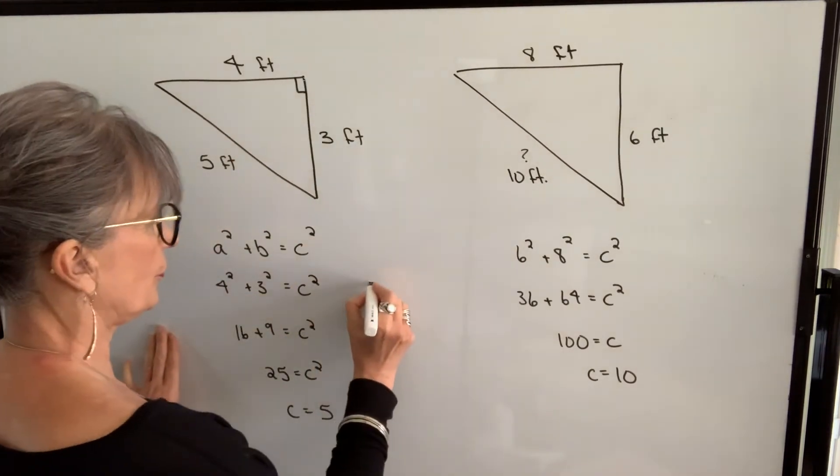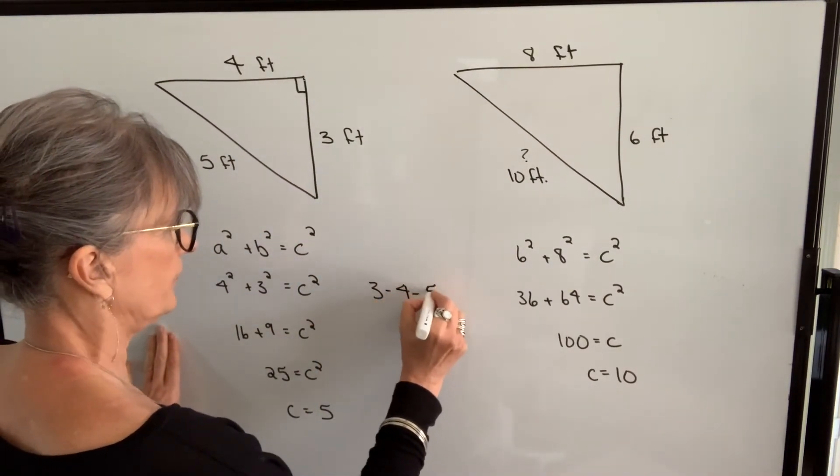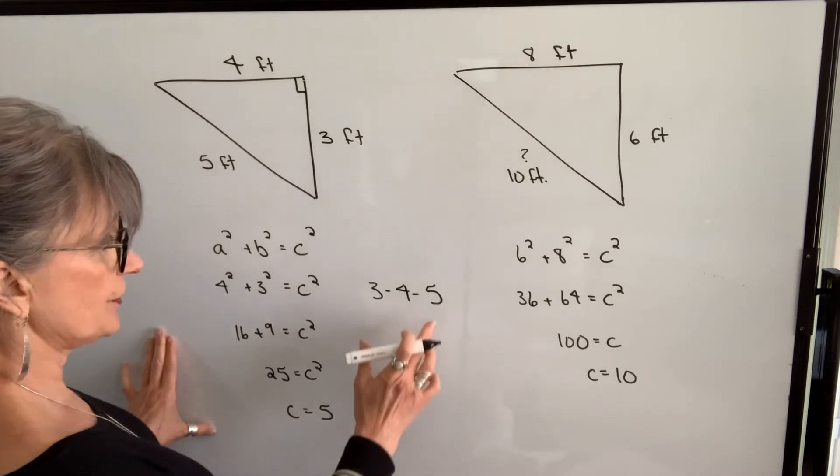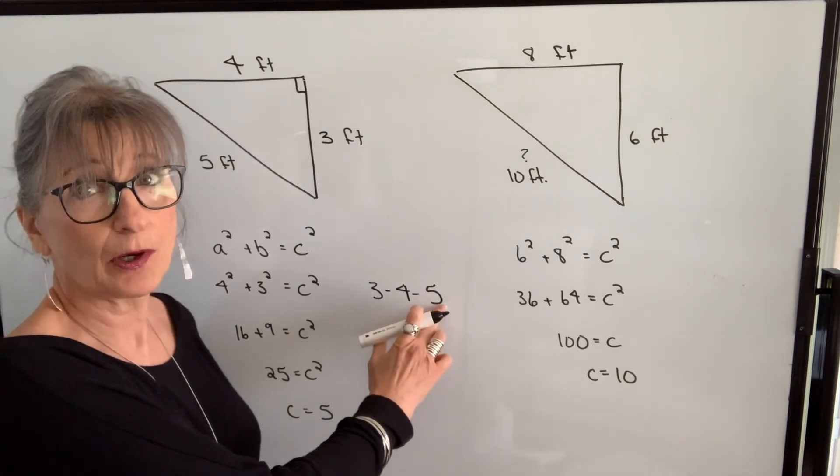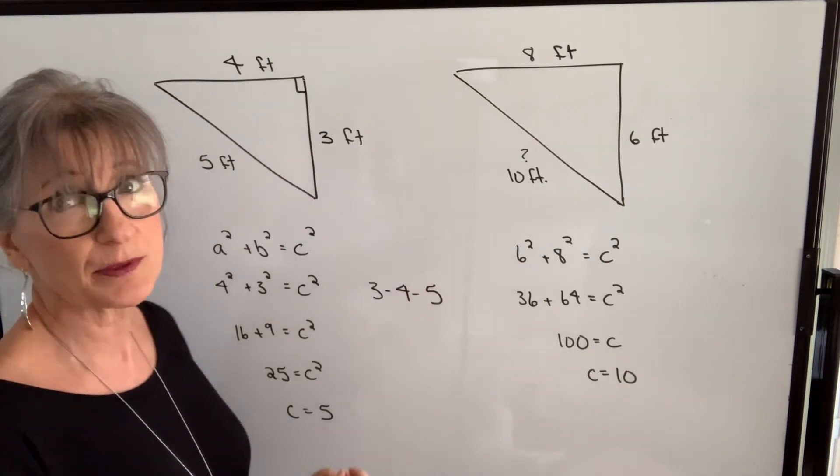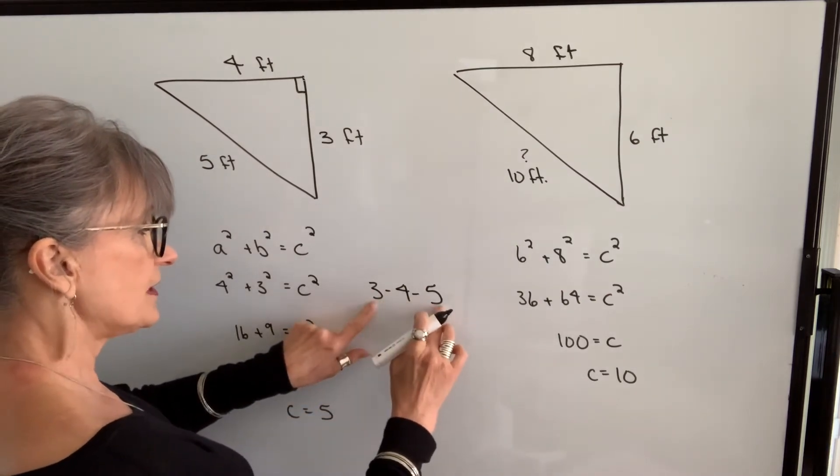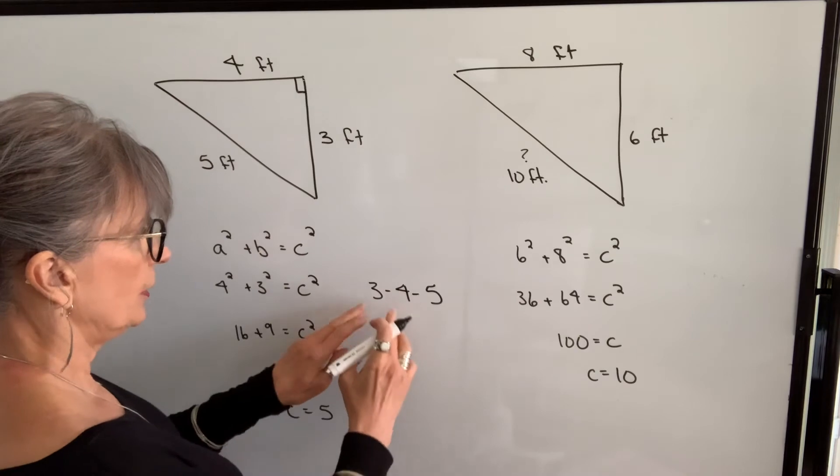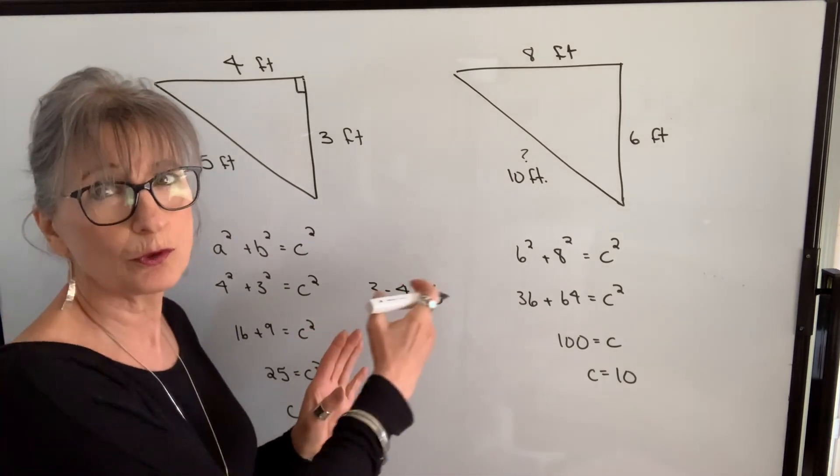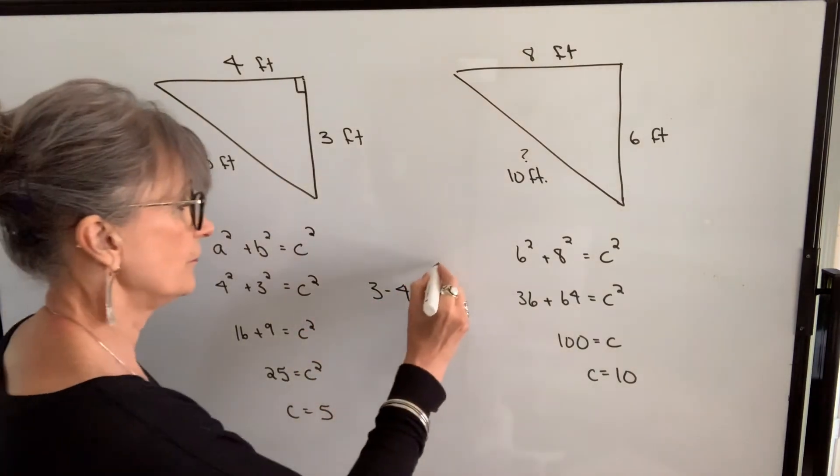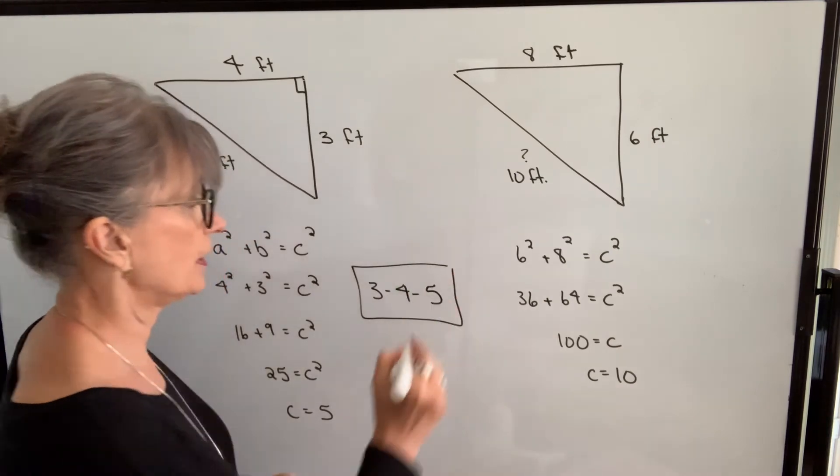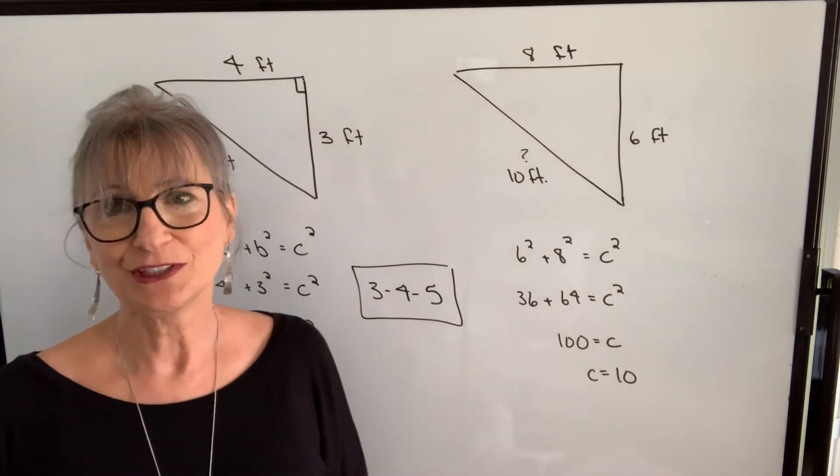So when you're working with a 3, 4, 5 triangle, understand first of all that that's going to be the length of the hypotenuse of the longest side or the side opposite the right angle. But if you double each of these numbers, you still have a right triangle. You could triple each of those numbers, you could quadruple them and so on. So a very useful triangle in the building and construction trades.